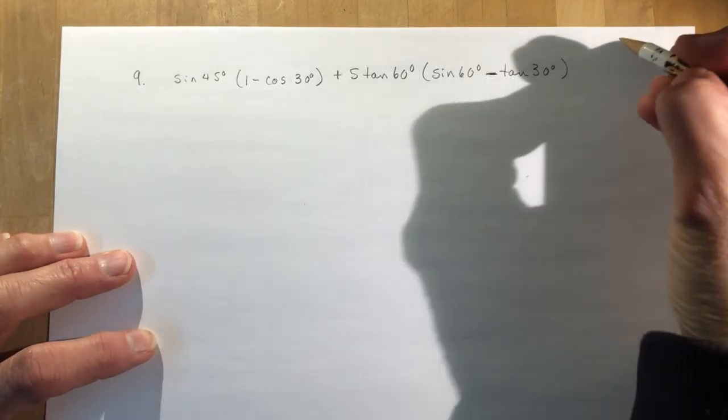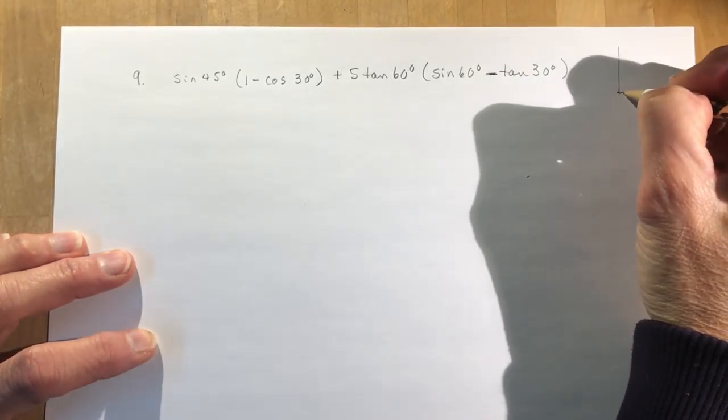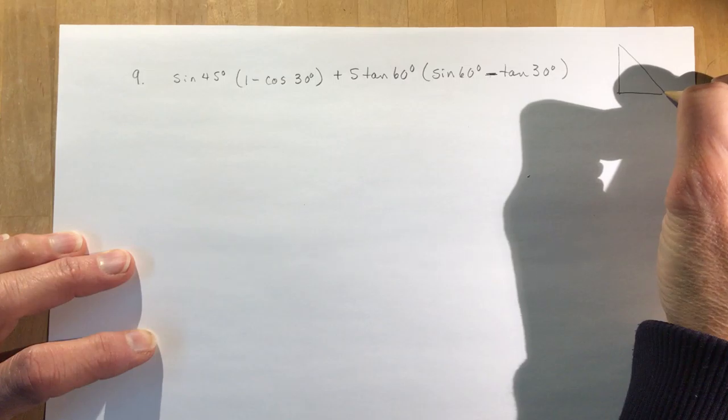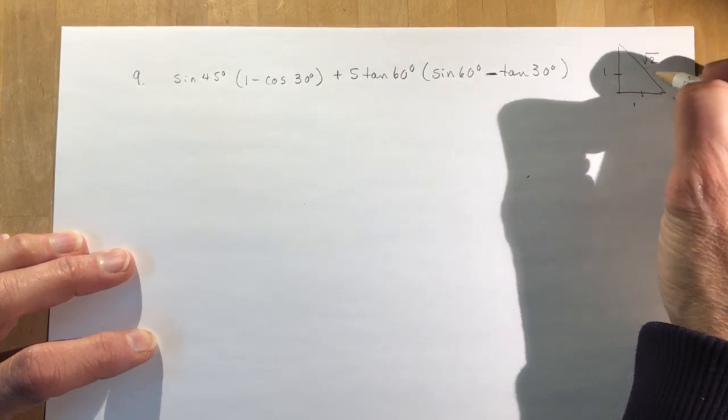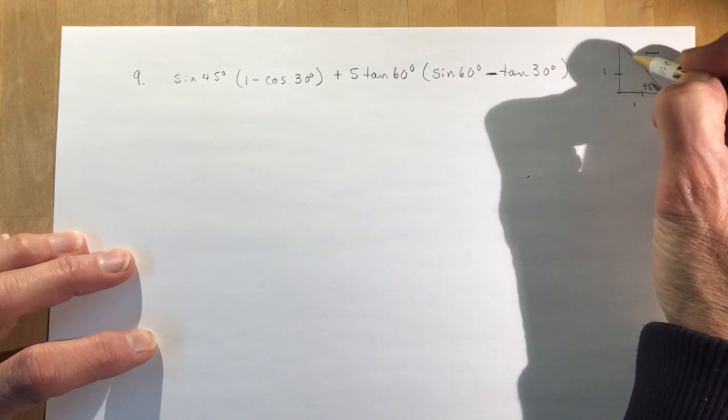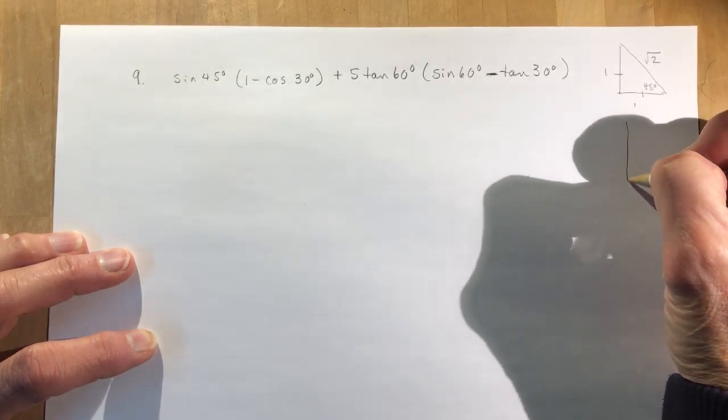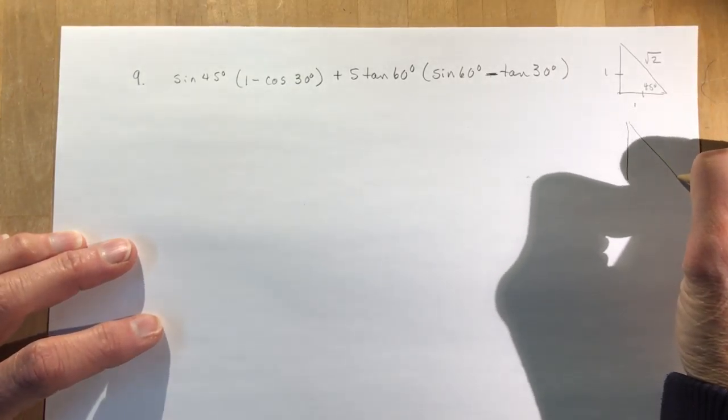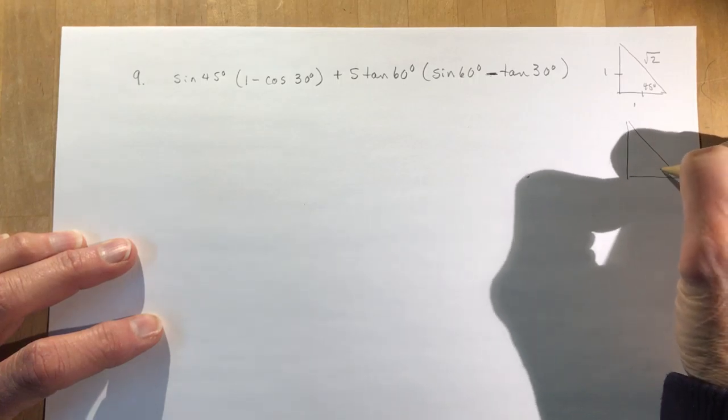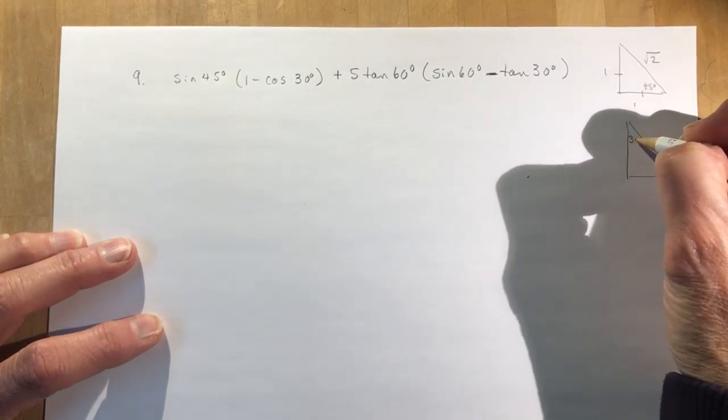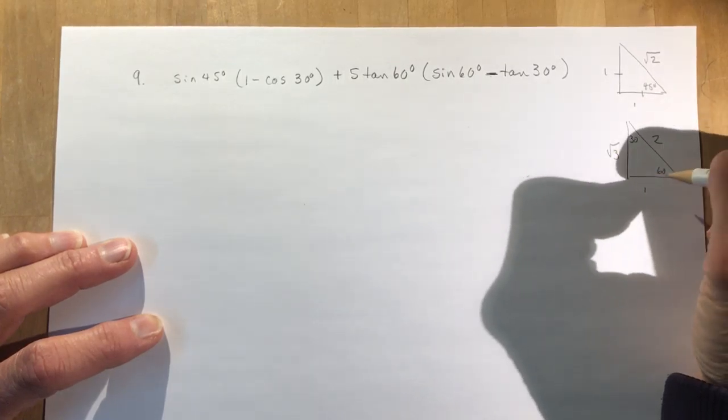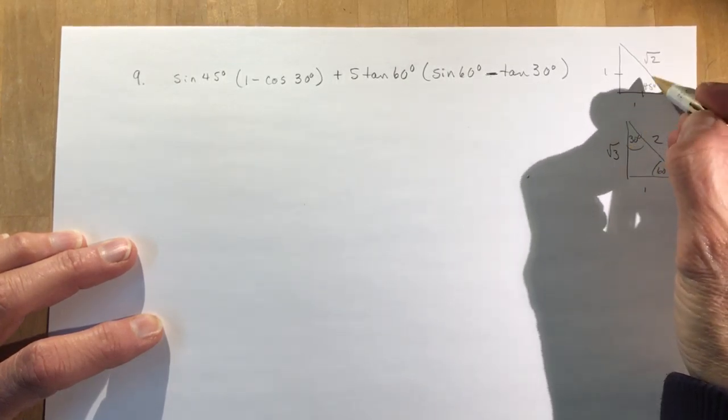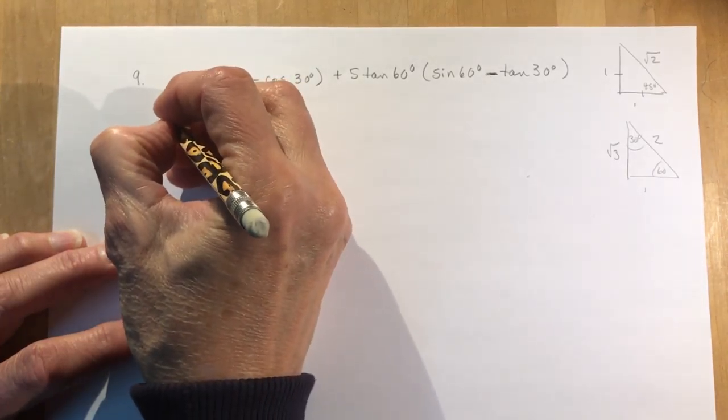So the first thing you had to do was sketch the two special triangles. And it's really good if you've got this nailed now. So you have 1, 1, square root 2 for 45 degrees. And when you do your 60, 60, cut it in half, gives you 60 here, 30 here, 2, 1, square root 3. So you should be able to figure out what these values are very quickly.